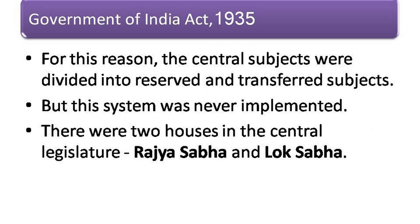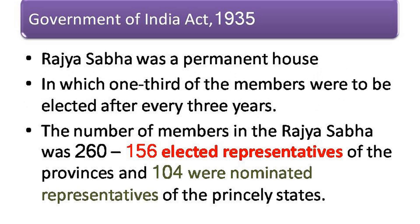There were two houses in the central legislature: Rajya Sabha and Lok Sabha. Rajya Sabha was a permanent house in which one-third of the members were to be elected after every three years. The number of members in the Rajya Sabha was 260, of which 156 were elected representatives of the provinces and 104 were nominated representatives of the princely states.